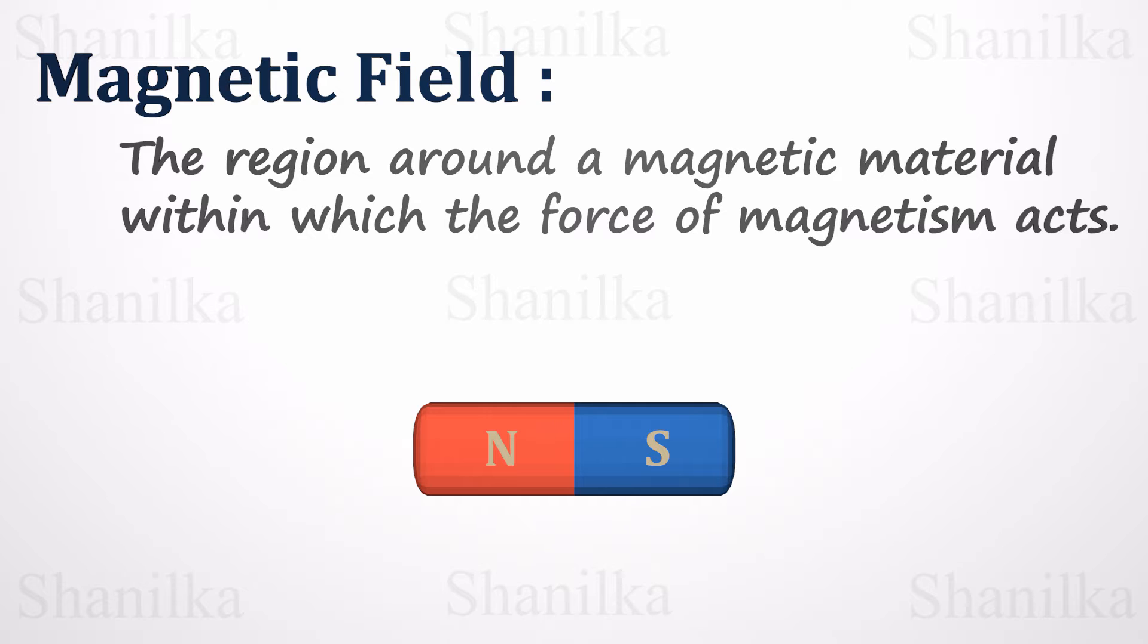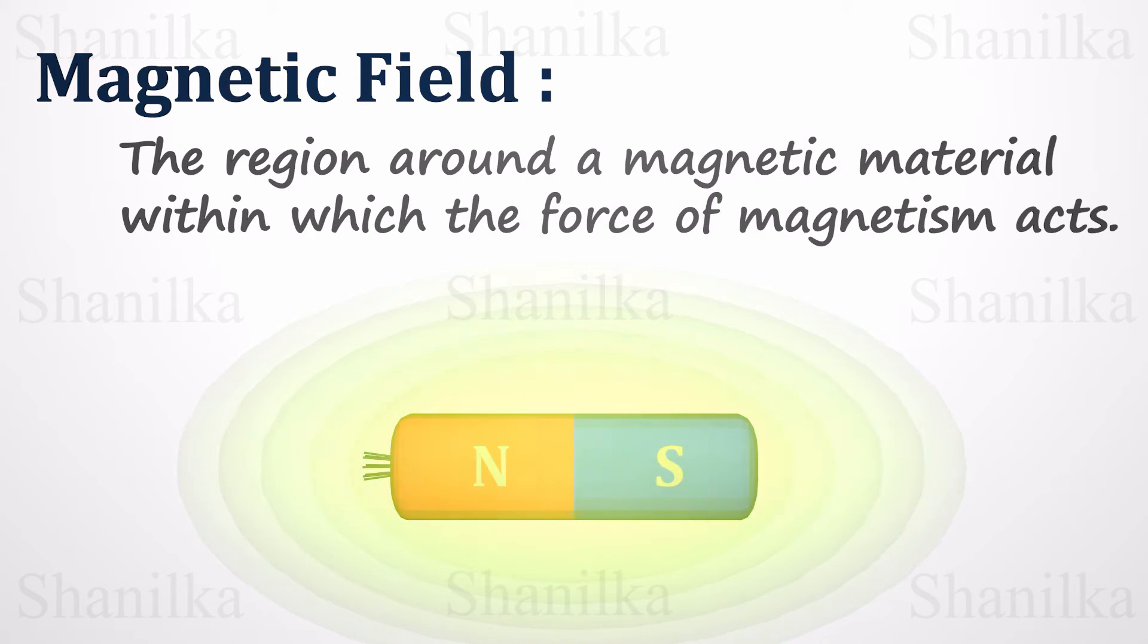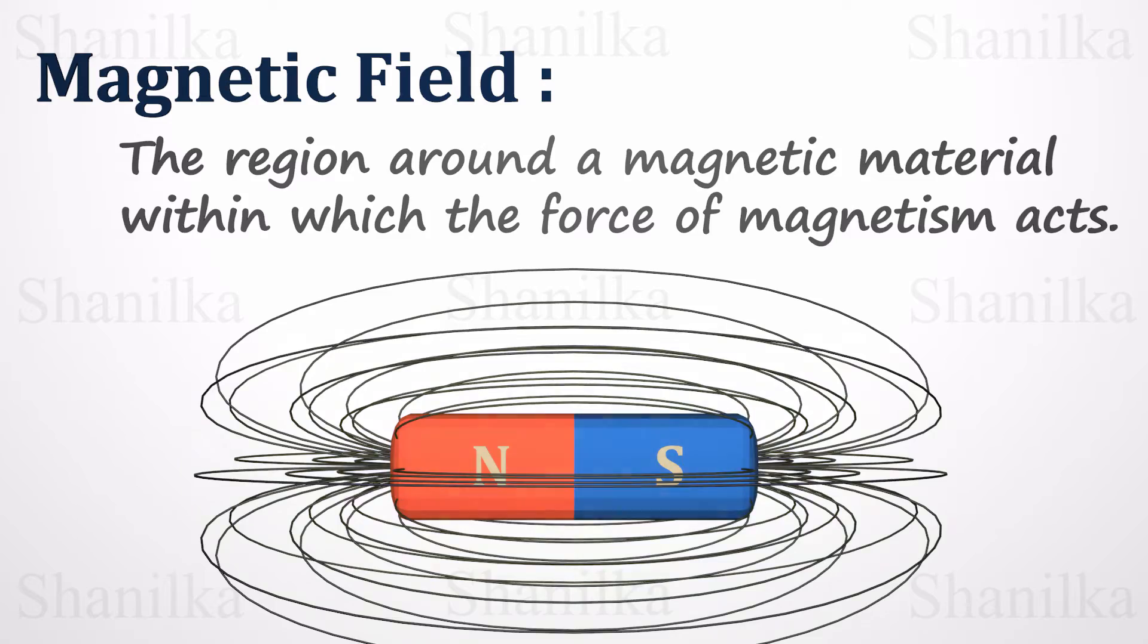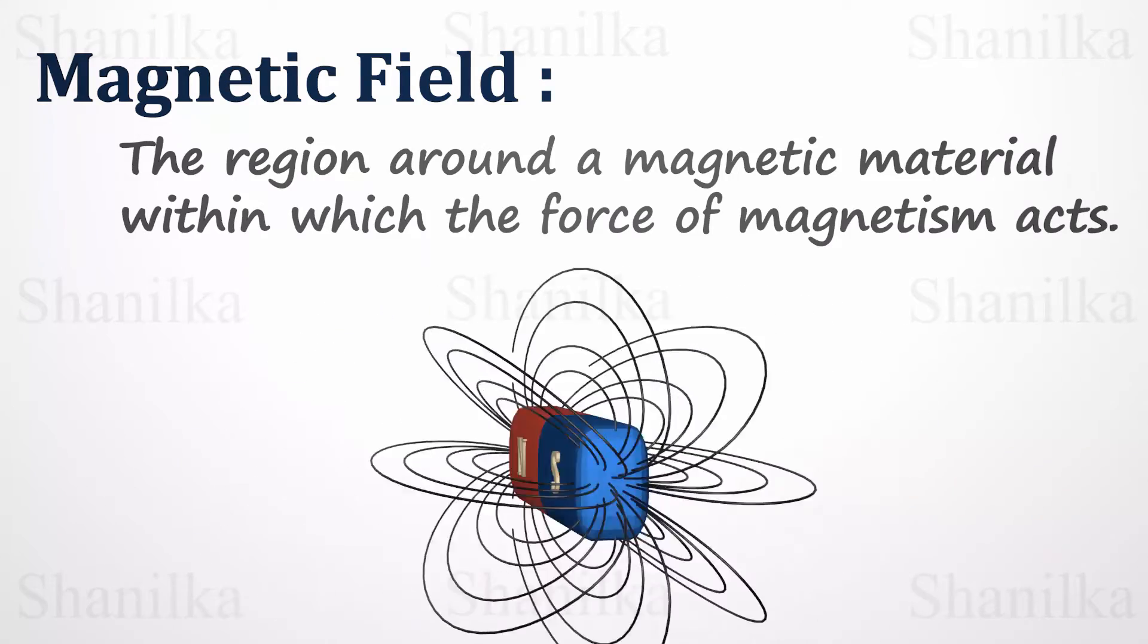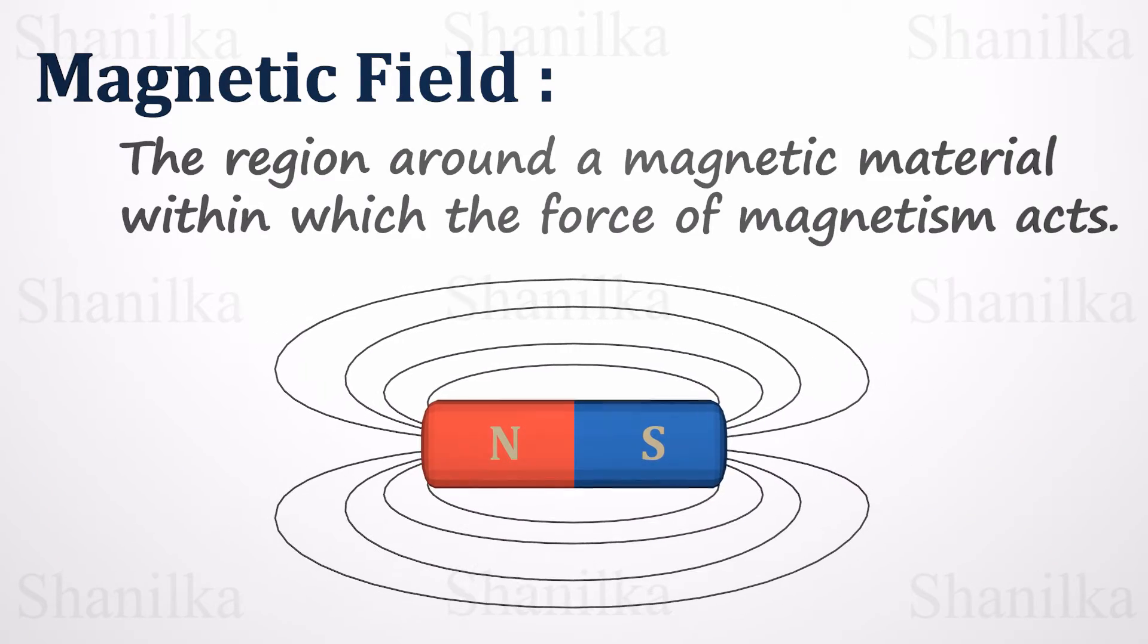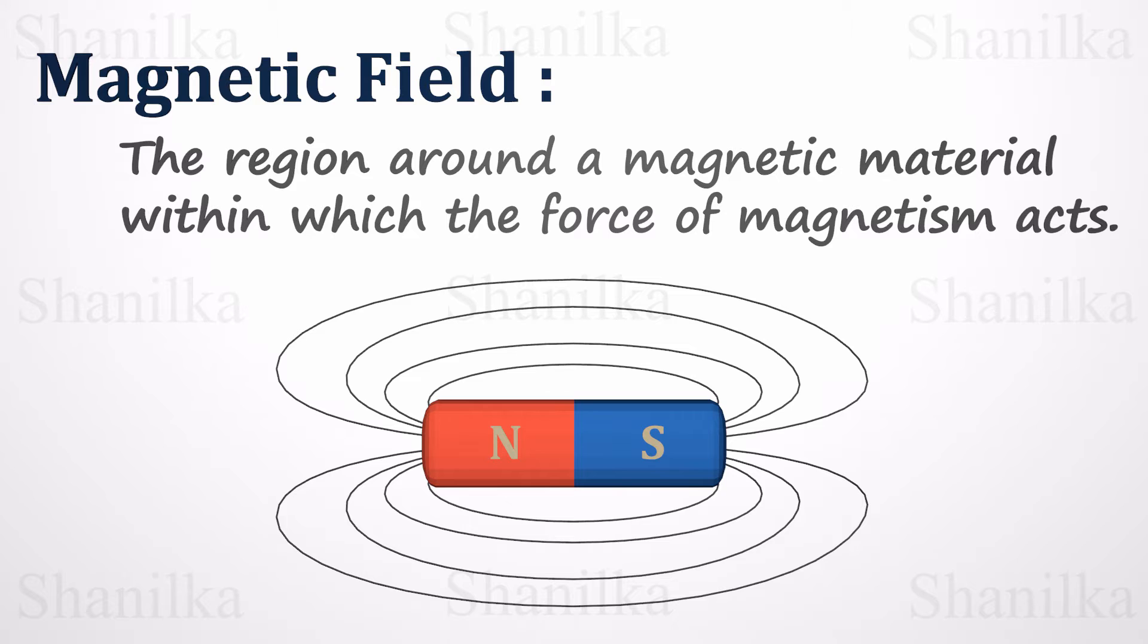Magnetic field is the region around a magnetic material within which the force of magnetism acts. A magnetic field is represented by a series of lines around a magnet. To have a better view, let's erase some. The direction of magnetic field lines is always from the north pole to the south pole. We show it using arrowheads.